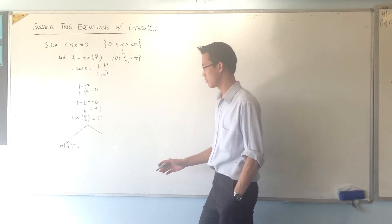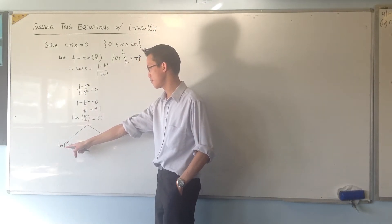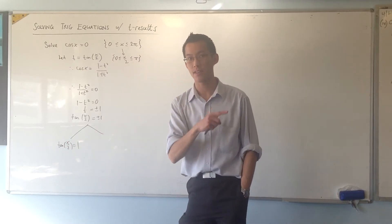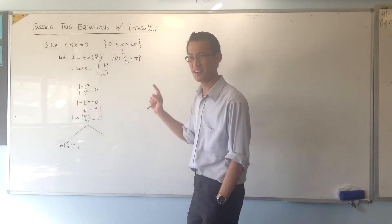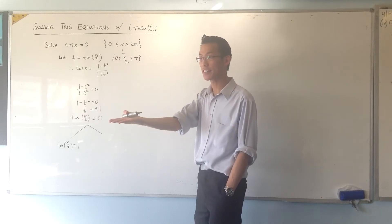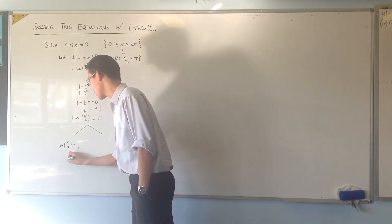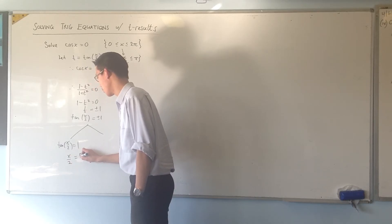Now, what value of x on 2, if you take the tan of that, gives you 1? That's an exact value. Do you remember? In radians? Tan of what gives you 1? Pi on 4. Right? So that means that x on 2 is pi on 4.